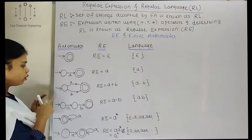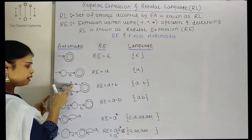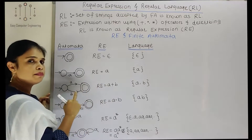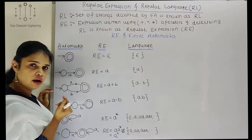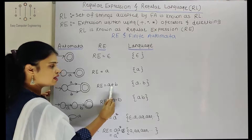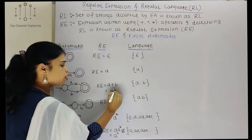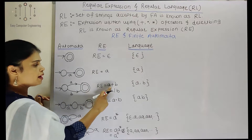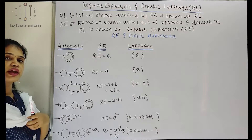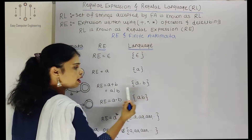Here we have one initial state and one final state, and I am accepting both 'a' and 'b'. So our regular expression will be 'a plus b', meaning we can accept either the input symbol 'a' or the input symbol 'b'. This plus represents 'or' — we can also write it as 'a or b'. Using this regular expression, we can accept only 'a' or 'b'.